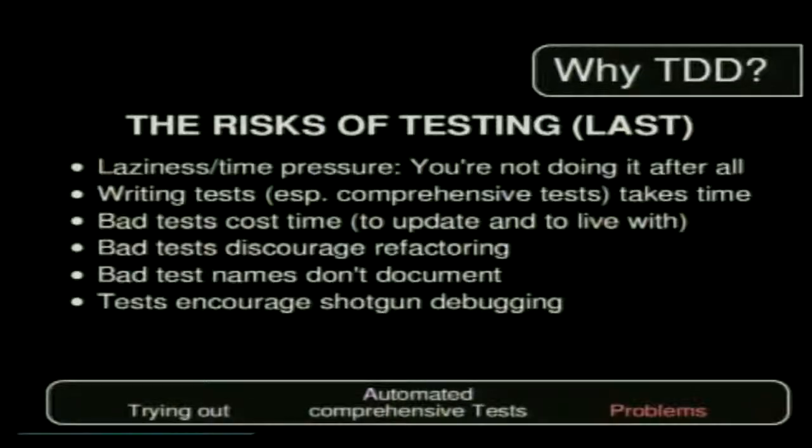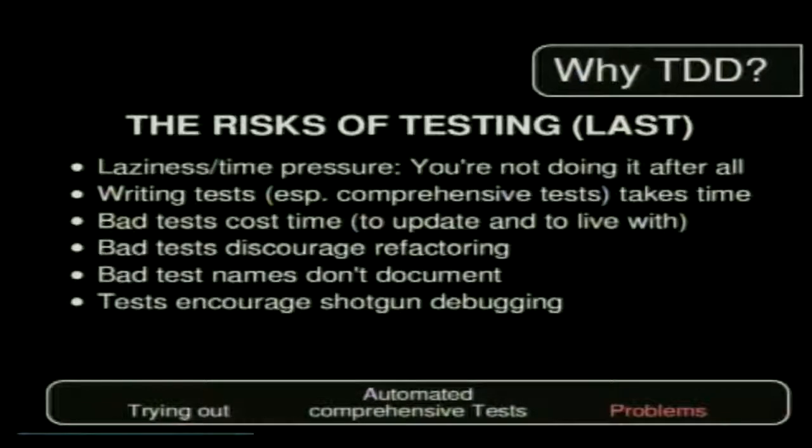Shotgun debugging is the scaled-up version of shotgun programming — you don't really have to understand the code at all. There's a bug somewhere or you have to add a new feature, tests break, and you just wiggle variables and run the tests until it works. No thinking involved.